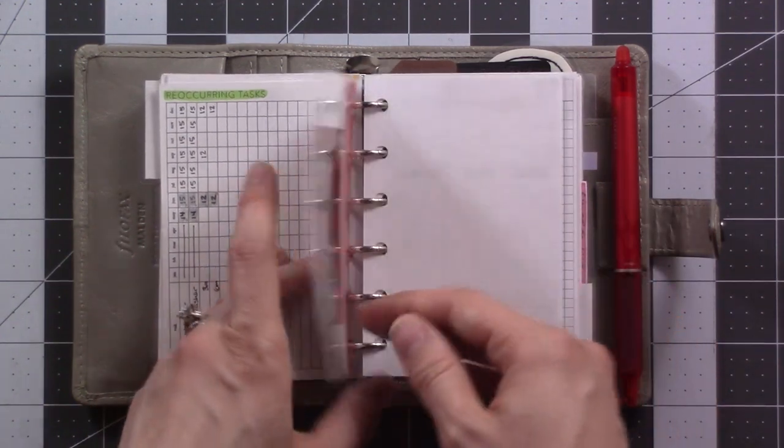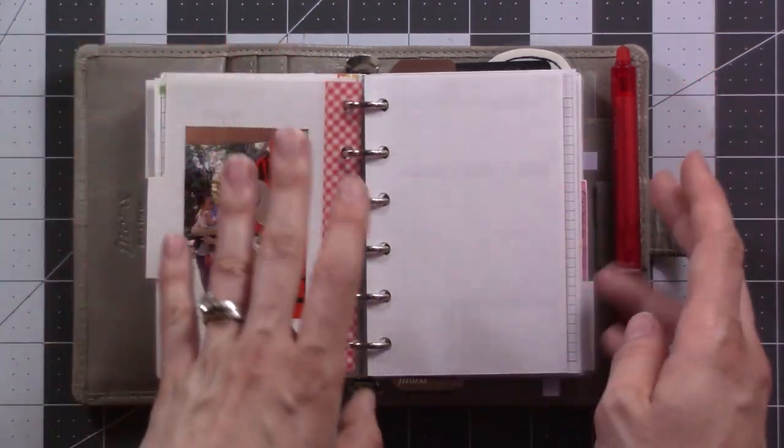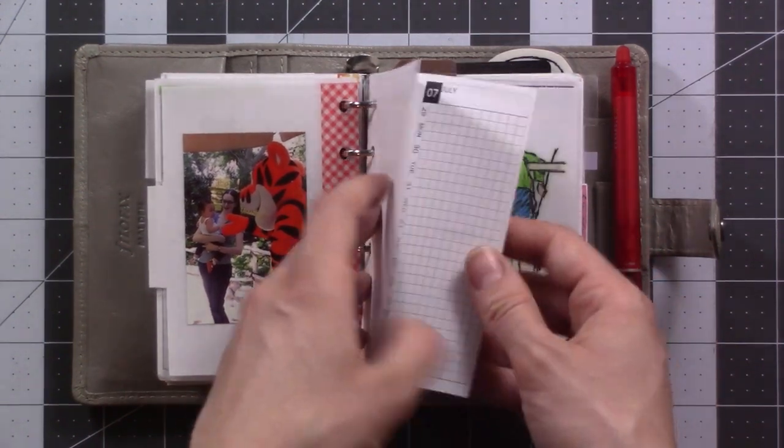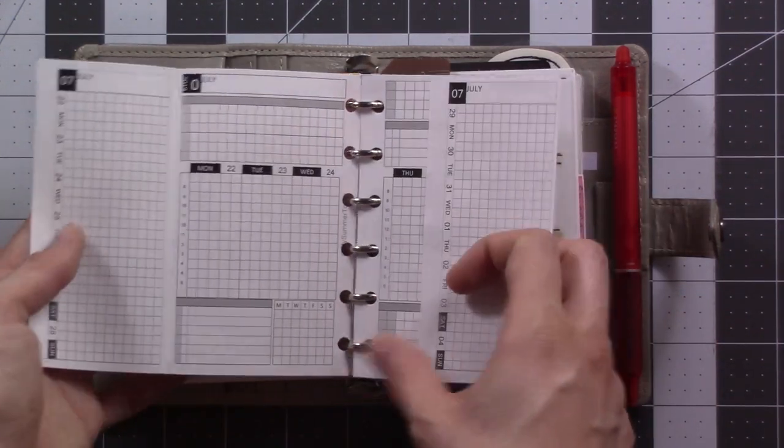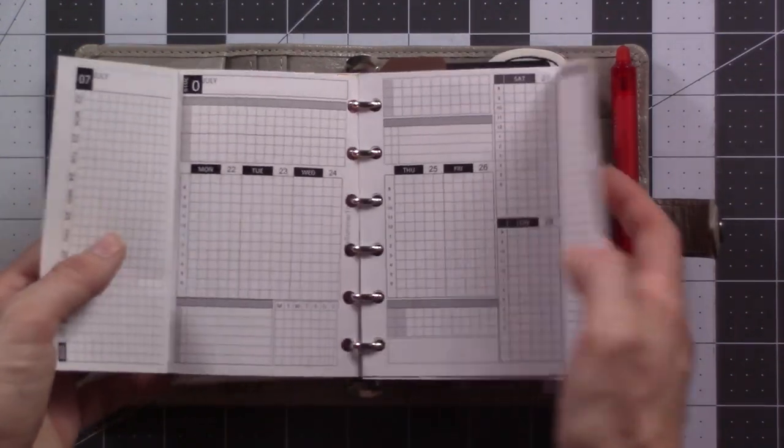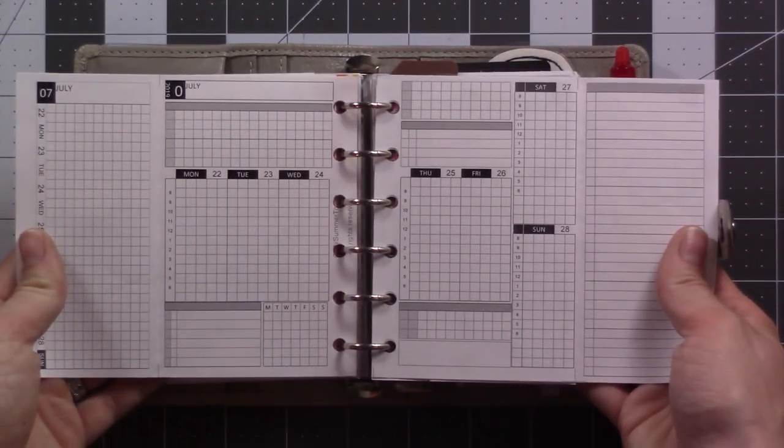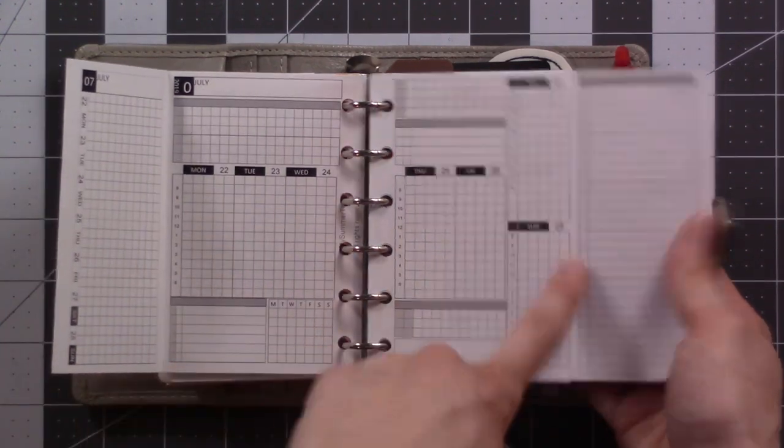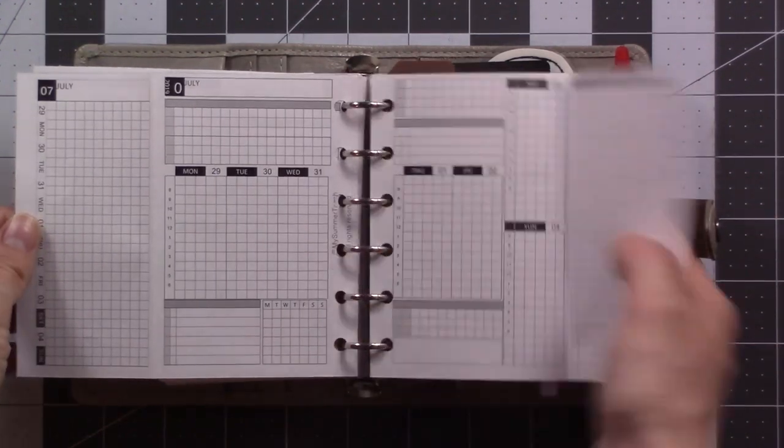Then the next section is weeklies. I'm not currently using it this week. I mentioned this yesterday, but I printed out and I cut and punched these inserts. These are from My Summer Touch and I'm going to be using these next week and the week after. So 22nd and the 29th, these two weeks.